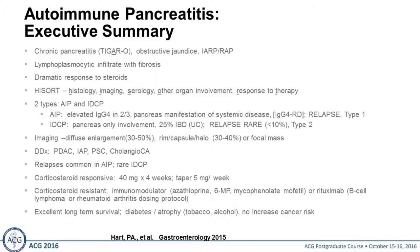Autoimmune pancreatitis breaks down into two major types. The old Type 1 is now called AIP, with elevated IgG4 in about two-thirds of patients — this is the pancreas manifestation of a systemic IgG4-related disease, and these are the ones that relapse. The IDCP is the pancreas-only manifestation; in about 25% of cases these patients have ulcerative colitis, and relapse is extremely rare at less than 10%. In regard to imaging, there's diffuse enlargement of the gland, a rim or halo, or a focal mass. The most important thing is to rule out pancreas cancer.